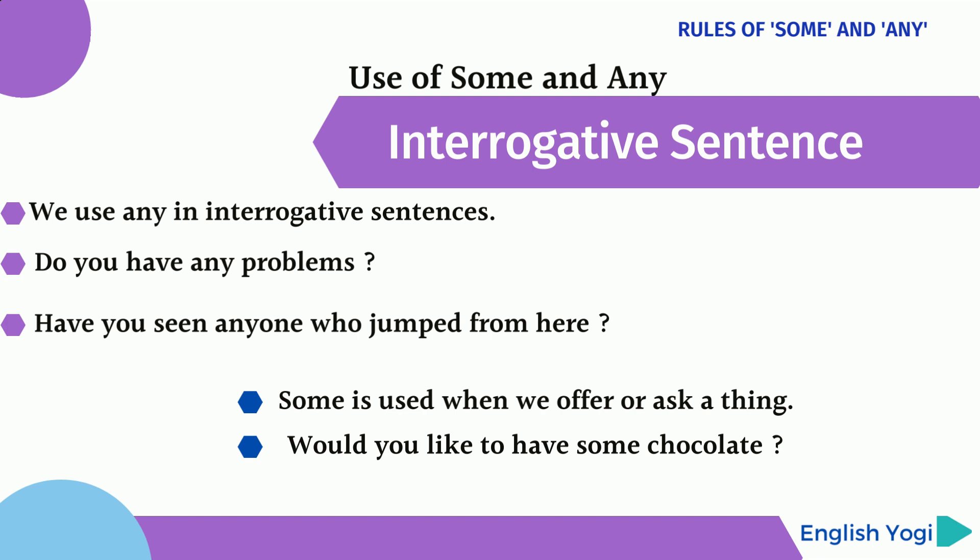'Someone', 'something', 'somebody' are also used in interrogative sentences, but when we offer or ask for a thing. For example: 'Would you like to have some chocolate?' This is an interrogative sentence, but we have used 'some' here. The reason is that in that sentence, we are offering or asking for a thing.